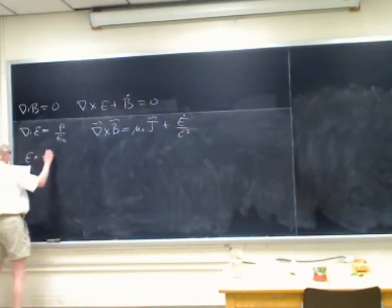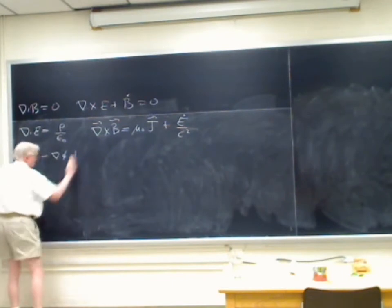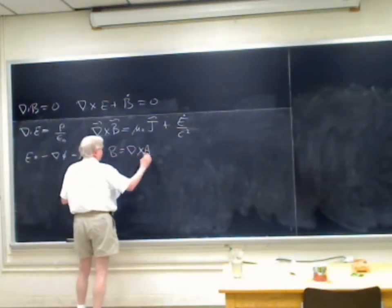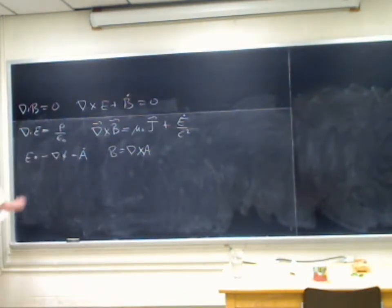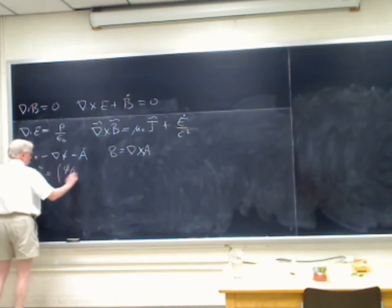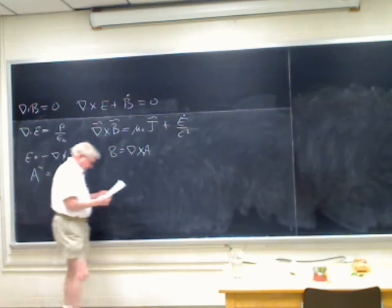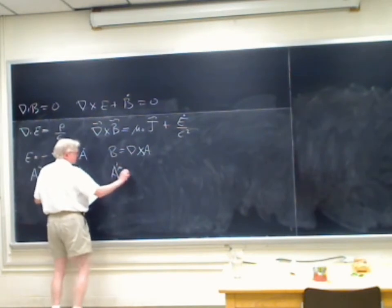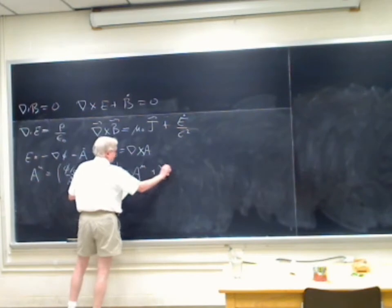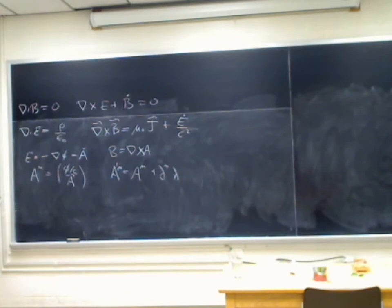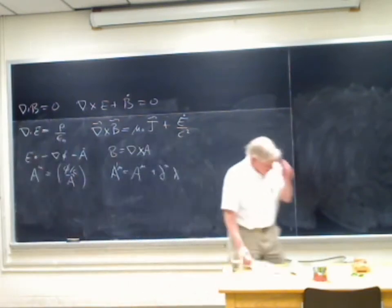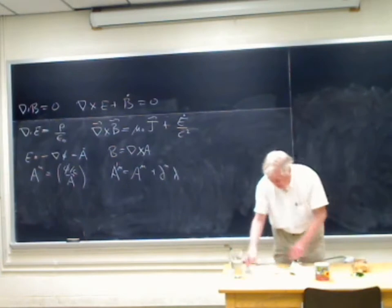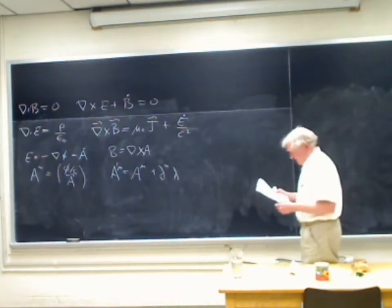We have E as minus grad phi minus A-dot, and as always B is the curl of A. That seems to be an equation that works in any system of units. The four-vector A-mu is phi over c and the vector A. A gauge transformation of the ordinary kind is of that form, and under it E and B do not change. One can use this gauge transformation to pick a convenient gauge for quantization — in fact, one has to do that.